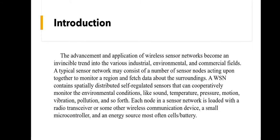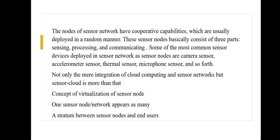Each node in a sensor network is loaded with a radio transceiver or some other wireless communication device, a small microcontroller, and an energy source — most often a cell or battery. The nodes of a sensor network have cooperative capabilities and are usually deployed in a random manner. This sensor node basically consists of three parts: sensing, processing, and communicating.